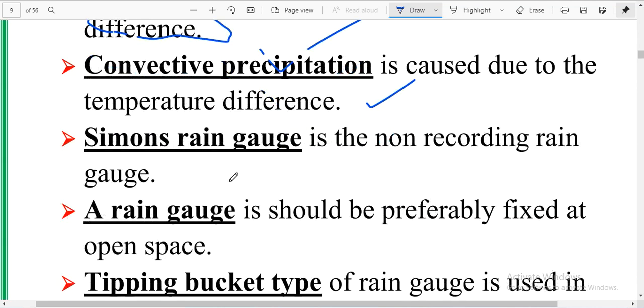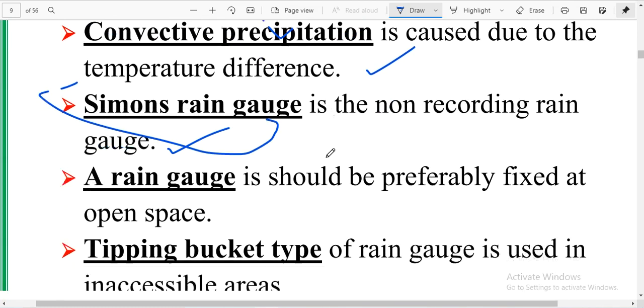Simon's rain gauge is a non-recording rain gauge. Rain gauge should be preferably fixed at open space.